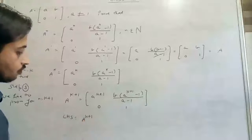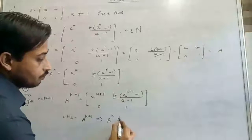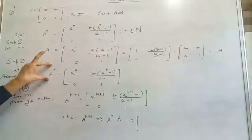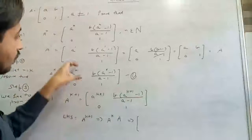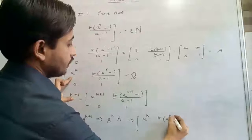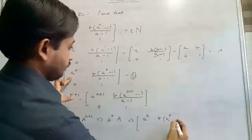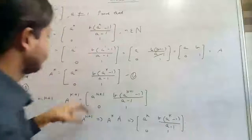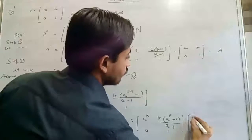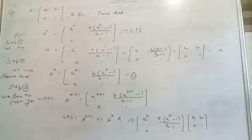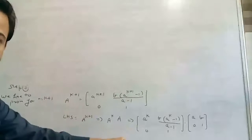A to the power k plus 1 can be written as A^k multiplied by A — we separate the base. Now A^k is given by our first equation from step 2, so we substitute: A^k, B(A^k minus 1)/(A minus 1), 0, 1 multiplied by A, B, 0, 1. Please make a note.